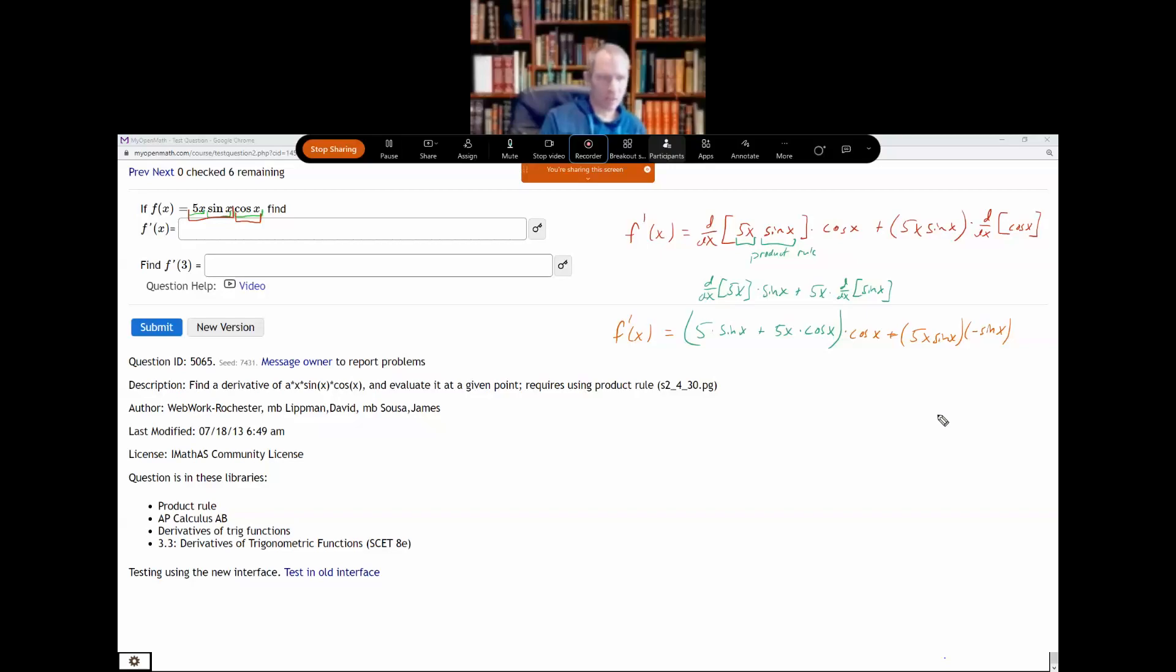So that's how we differentiate when there's more than one multiplied piece. Does that make sense? Yep. Got it. Thank you.